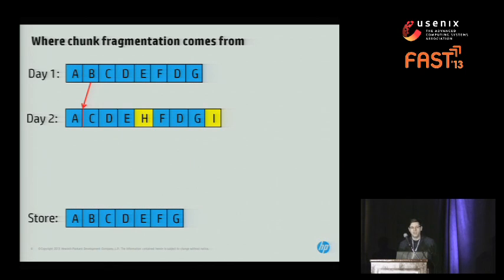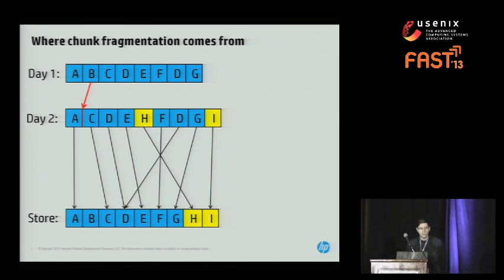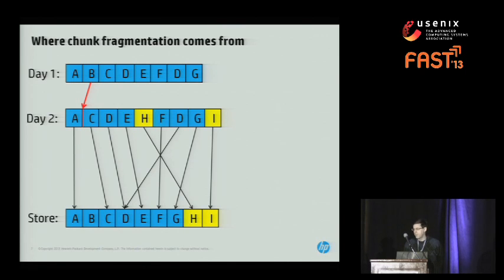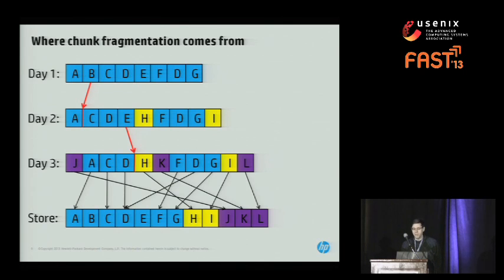Backup is an ongoing process, so the next day we get a new version of the backup. Usually data doesn't vary too much from day to day. In this case, chunk B has been deleted and chunks H and I have been added. We proceed as usual to deduplicate, adding the new chunks to the end and pointing to the existing data as possible. You may notice that the recipe is becoming a little more tangled here than it was before, and this is in fact the general trend. On the third day, once again I delete a chunk, add a couple chunks, deduplicate it, and now we're getting really tangled.